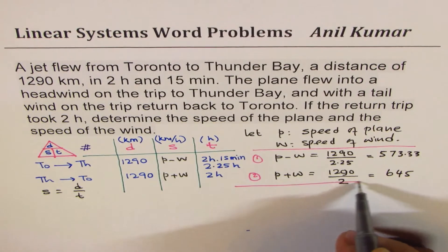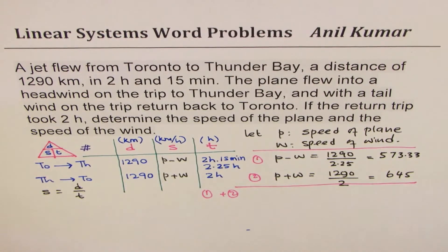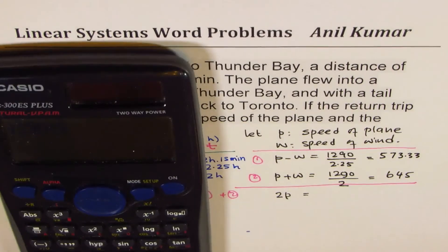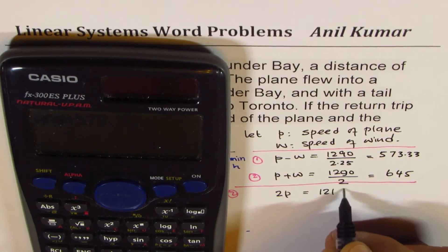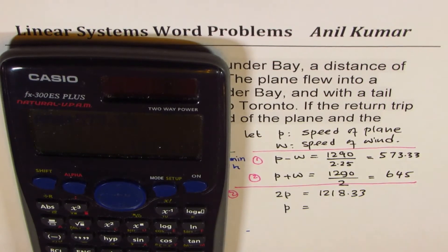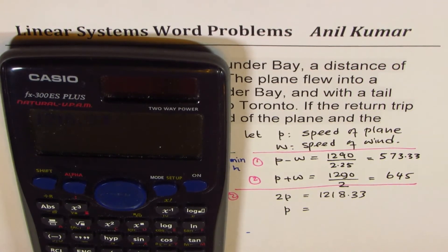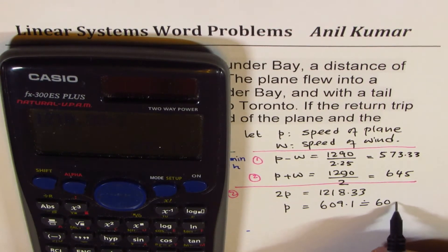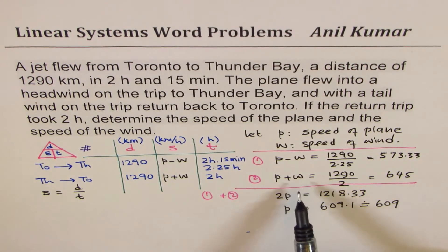If we add Equation 1 and Equation 2, the wind terms cancel out: minus w and plus w eliminate each other. We get 2 times p equals 573.33 plus 645, which is 1218.33. Dividing by 2, the speed of the plane is approximately 609 kilometers per hour.